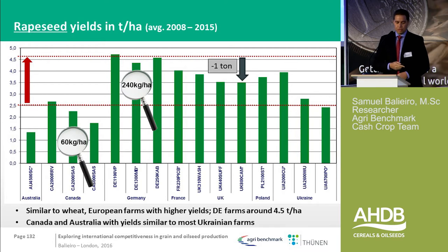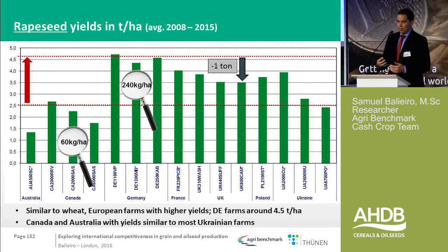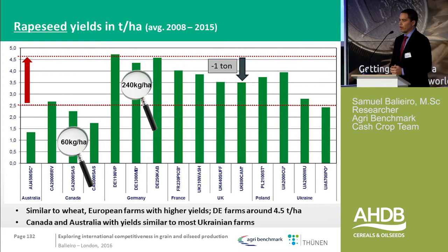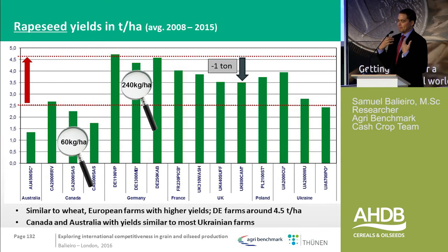Looking at nitrogen input, you can see the difference — European systems are much more intensive. That could become important as the European Union moves to more nitrogen regulations, which may also create problems in rapeseed. We don't have rapeseed data for Russia yet in our typical farms. Ukraine shows a mixed picture — the first farm is a very western-type management with very high yields, while you also see differences across management types.